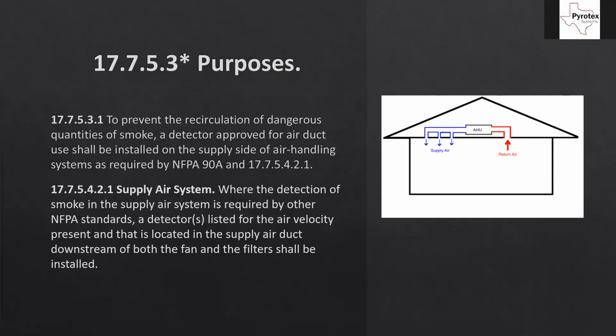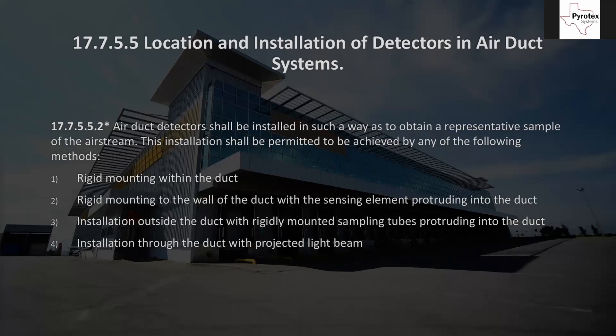So the supply air duct detector goes on the supply side, and it has to go before the duct branches off — though the 72 doesn't explicitly say that here. Now we get to the location and installation of detectors in air duct systems. Air duct detectors shall be installed to obtain a representative sample of the airstream. This can be achieved by any of the following methods: rigid mounting a smoke detector inside the duct, or rigid mounting to the wall of the duct with the sensing element protruding into the duct.